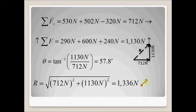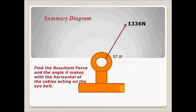The resultant force is 1336 newtons acting up and to the right, at a direction of 57.8 degrees from the horizontal. We have magnitude, direction, sense, and the point of application is the eye bolt — all four components are defined. The summary diagram shows 1336 newtons at 57.8 degrees. That completes the calculation of the resultant force of this system of forces. Thank you, I hope this helps with your studies.